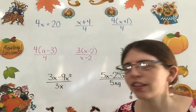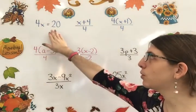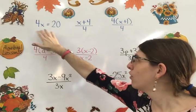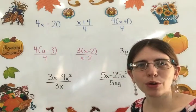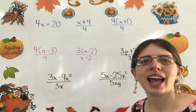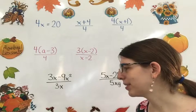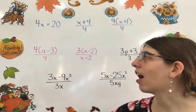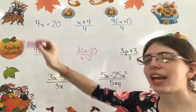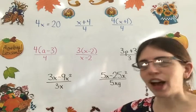But first of all, let's look up here at this first blue equation that I have. 4x equals 20. We're used to seeing something like this. How do we get our x by itself? We do the opposite, right? And the opposite of multiplying 4 times x is what? Dividing.